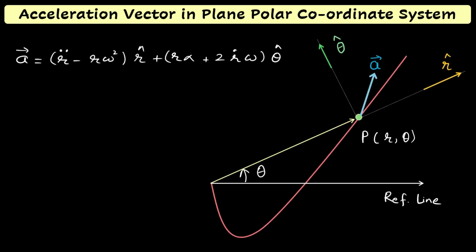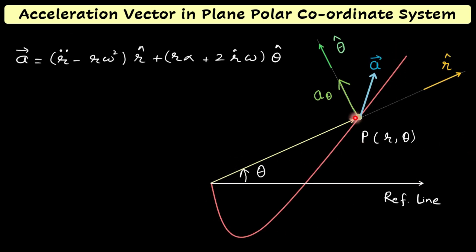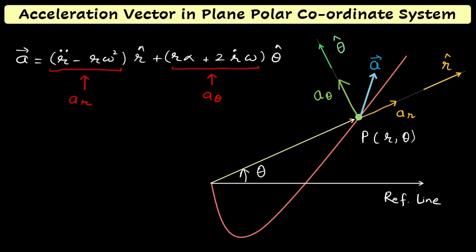So the acceleration components are ar = r̈ − rω² along r̂ and aθ = rα + 2ṙω along θ̂. In circular motion, r is constant so r̈ = 0 and ṙ = 0, leaving only −rω²r̂, which is the centripetal acceleration, and rα·θ̂, which is the tangential acceleration. In the next video we will look at applications of the plane polar coordinate system to find velocity, acceleration, and related quantities in complex situations. Thank you for watching — stay tuned.